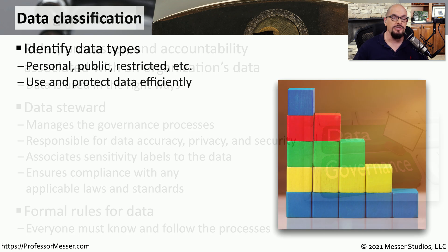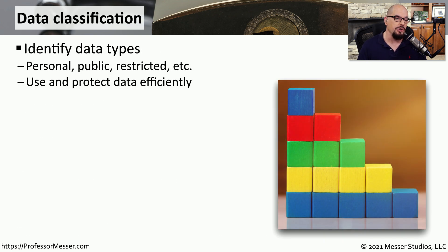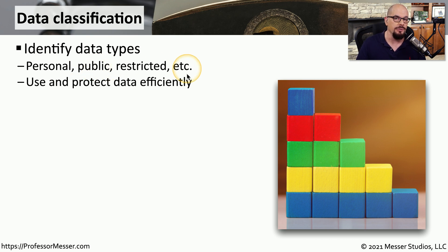The data steward will look through the data and determine what labels are associated with these data types. We'll need to identify if the data is personal data, if it happens to be public information, or if this information should be restricted. By identifying these data types, the data steward can ensure that the data is used and secured properly.